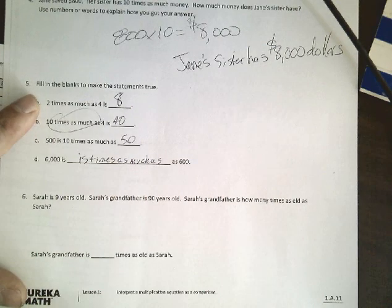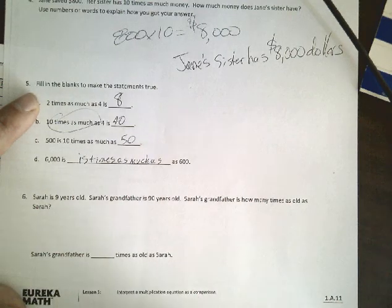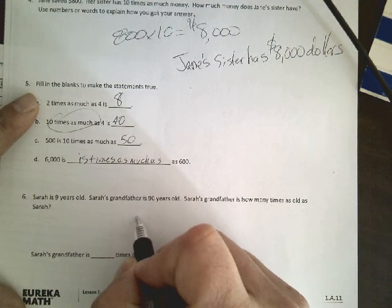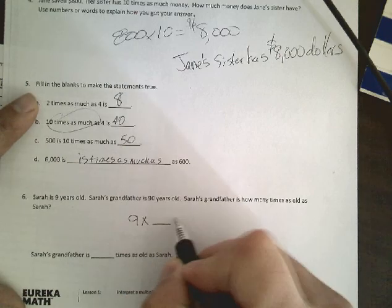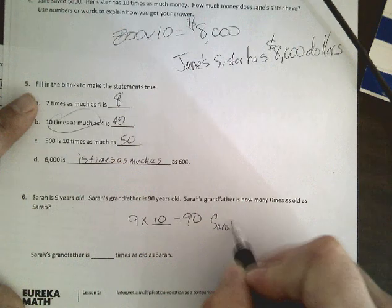Sarah is 9 years old. Sarah's grandfather is 90 years old. How many times as old is Sarah's grandfather? So 9 times what equals 90? Well, that's 9 times 10, so Sarah's grandfather is 10 times as much as Sarah, and then there's the answer right there.